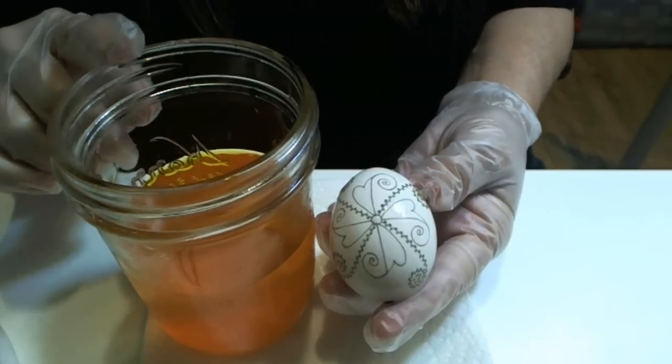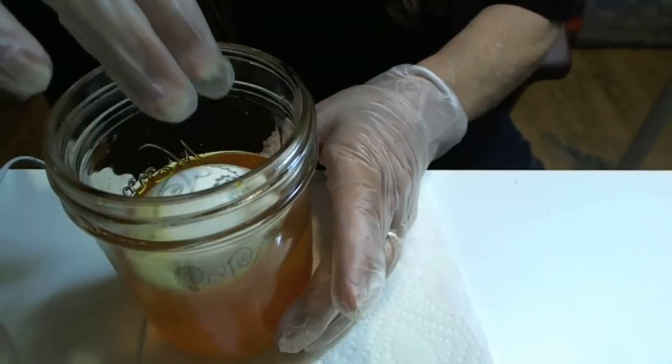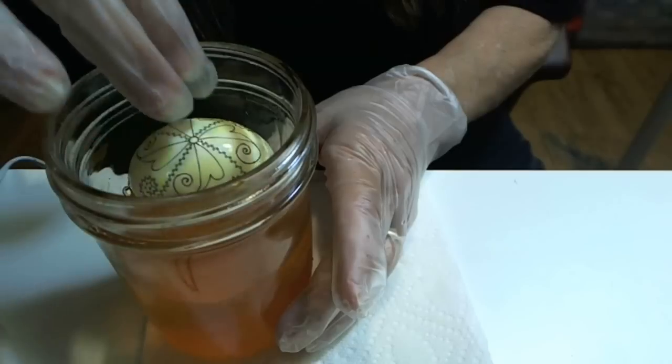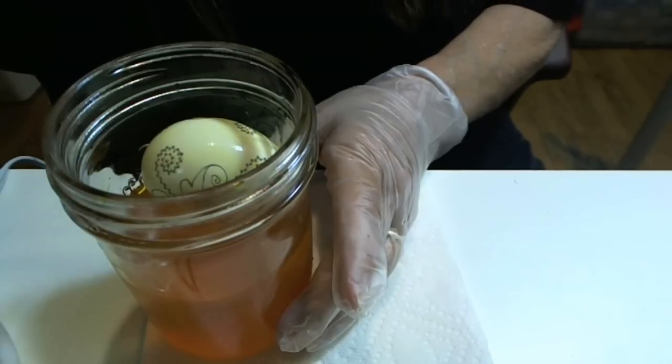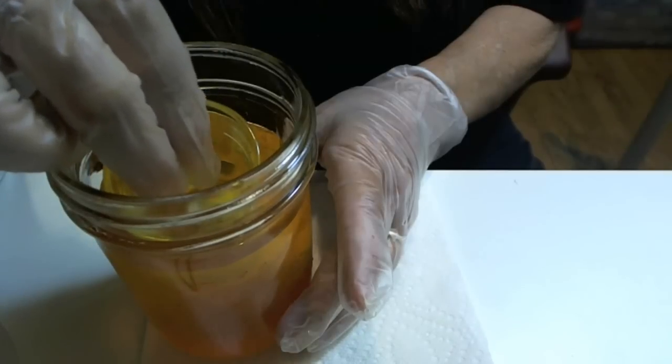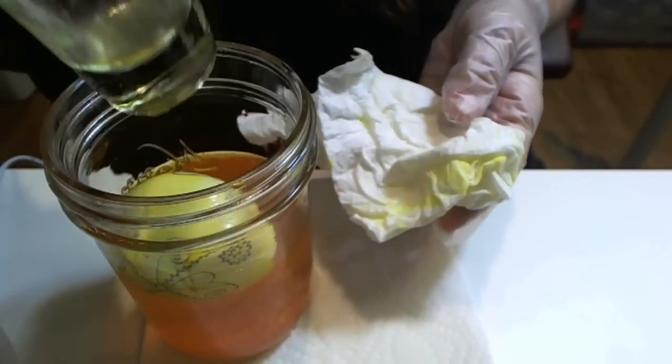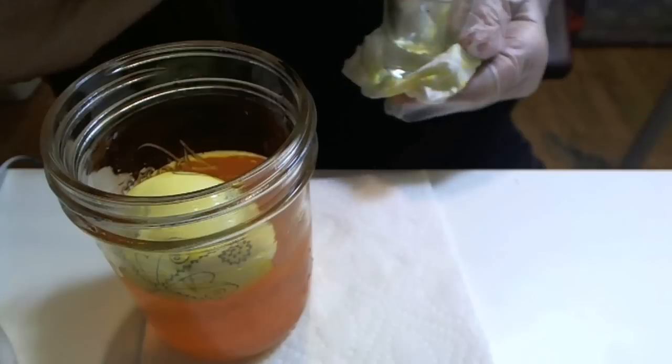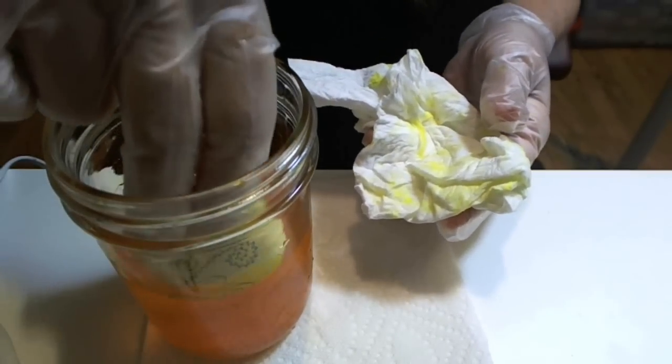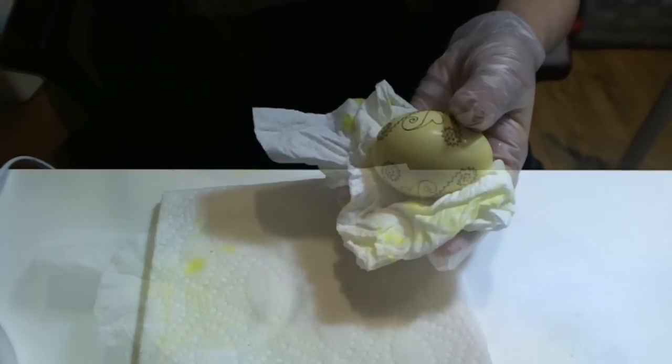I am going to use a wide-mouth mason jar. Some artists just put their eggs in and roll them. Others will weigh them down and then they can walk away. However, there is another technique that I like to use, and that one is to put the egg into a baggie with the dye.